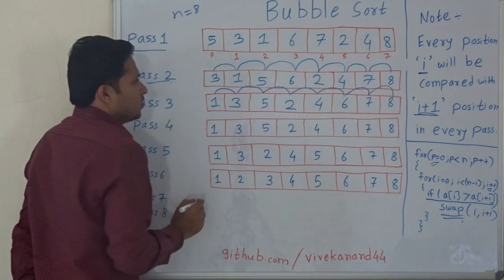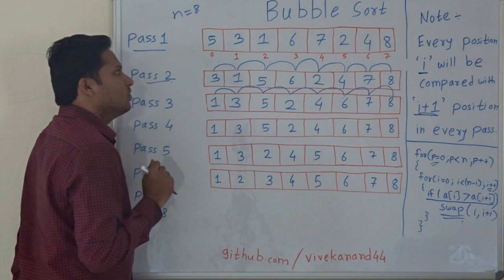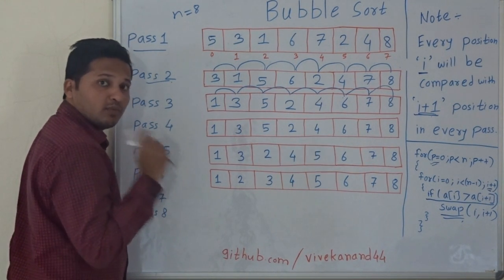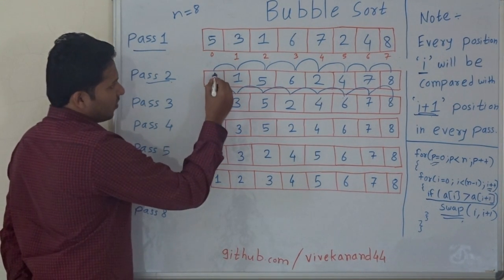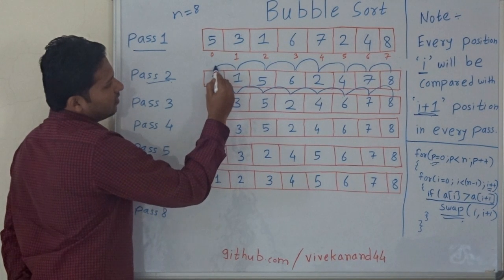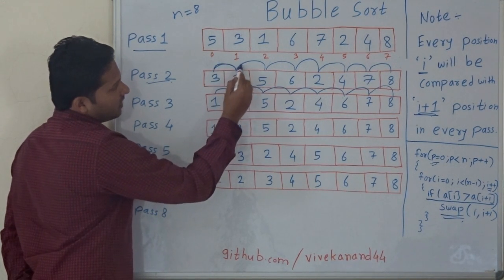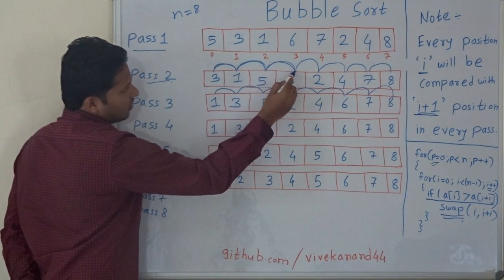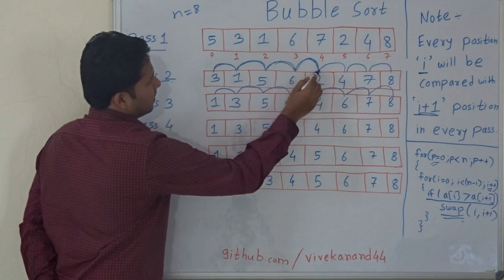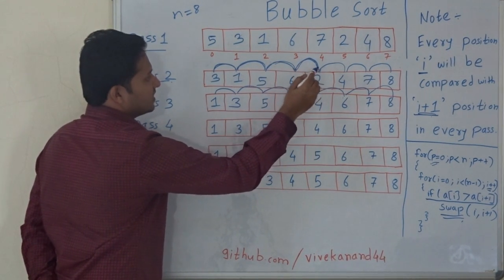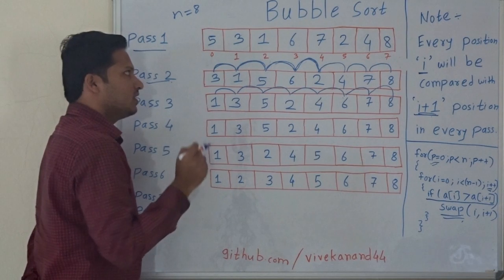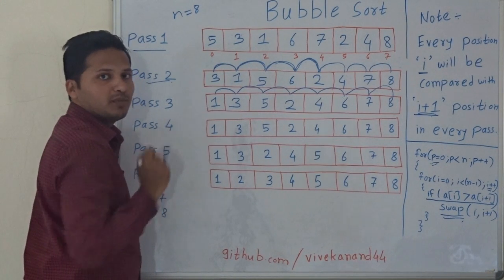Here I want to tell you why this algorithm is called bubble sort — it is because of the pattern of comparison. It looks like a bubble, so it is called bubble sort.